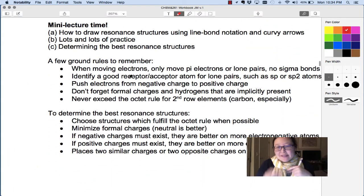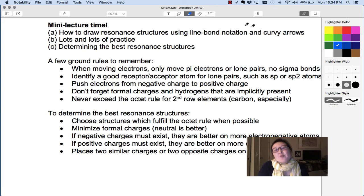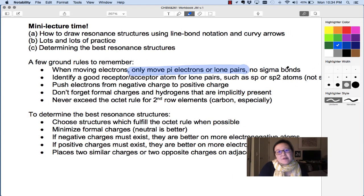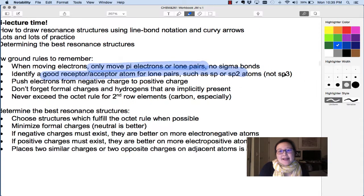So a couple of things to remember while we work through these exercises. You only move pi electrons or lone pairs, which can also be part of a pi system. So only move pi electrons or lone pairs. Do not ever move or break sigma bonds. Those are our foundation. You want to keep the foundation there. Identify good acceptor atoms for lone pairs, which are sp or sp2 hybridized, not sp3.